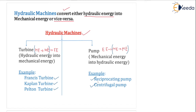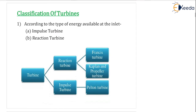This chapter is very important because it gives you the structure of the entire subject of hydraulic machines. We will first see the hydraulic machines definition, then the turbine, followed by the Francis turbine, Kaplan turbine, and Pelton turbine one by one. Then we move to pumps, the specific speed of pumps, and finally velocity triangles. Let us start with the classification of turbines.